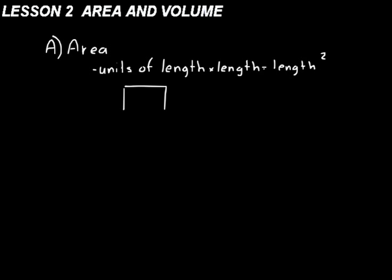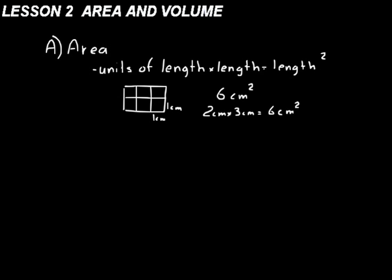For example, if you had a rectangle and broke it up into squares, we have six squares, and each one is one centimeter by one centimeter — so we'd say six centimeters squared, or square centimeters. We could also figure that out by multiplication: two centimeters times three centimeters gives us six square centimeters. Centimeter times centimeter gives us centimeter squared.